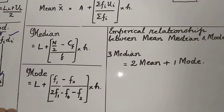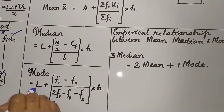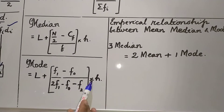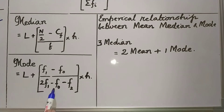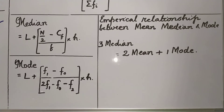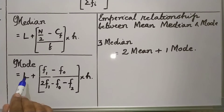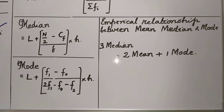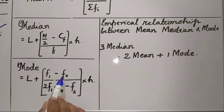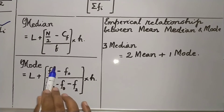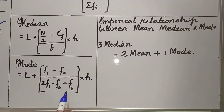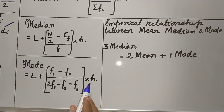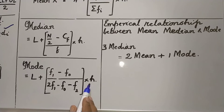How do we calculate the mode of grouped data? Mode is given by: L plus F1 minus F0, divided by 2F1 minus F0 minus F2, into H. Where L is the lower limit of the modal class, F1 is the frequency of the modal class, F0 is the frequency of the class preceding the modal class, and H is the class size.